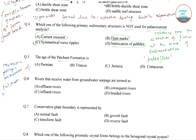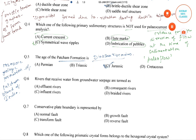The Patchman formation is a Mesozoic geological formation of Patchman Island of India. In this formation, dinosaur remains are among the fossils that have been recovered. Therefore, the age of the Patchman formation is Jurassic age, and the correct answer is option C.